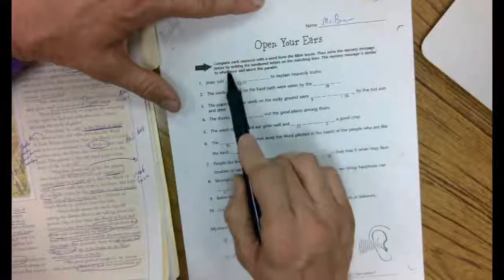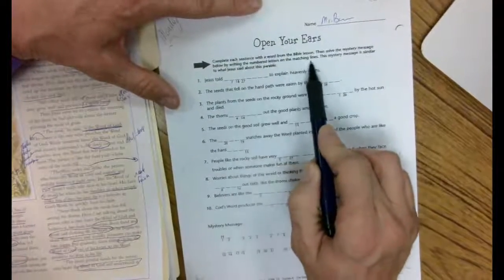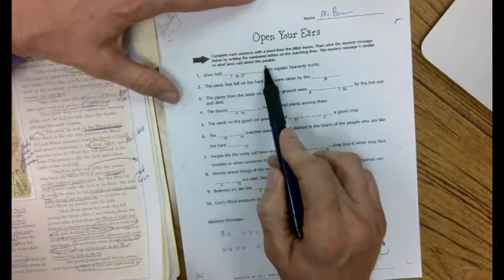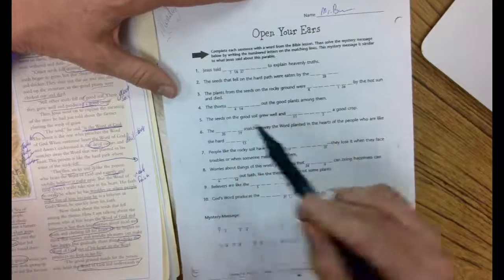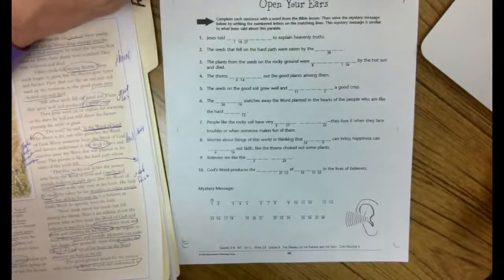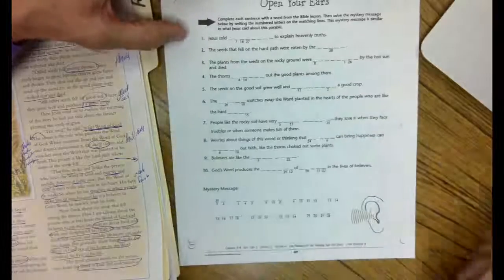Then solve the mystery message below by writing the numbered letters in the matching lines. This mystery message is similar to what Jesus said about the parable. I actually circled the answer on the back of your Christ Light sheet. If you did it on yours, you'll already have the answer to that.